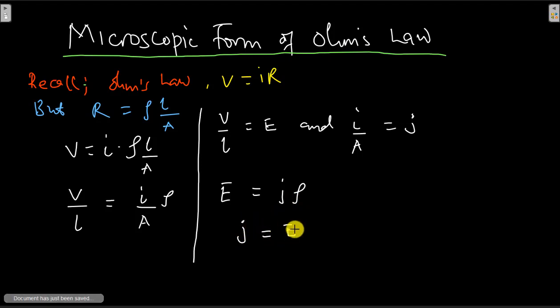We also know that 1 over ρ is another quantity called sigma, and we call this the conductivity of the material. The conductivity is the reciprocal of the resistivity.